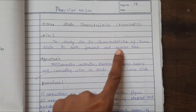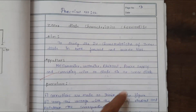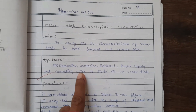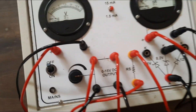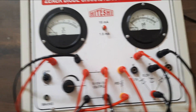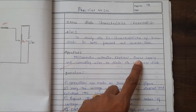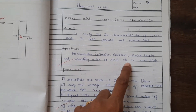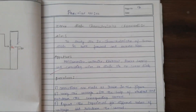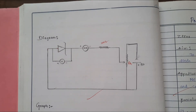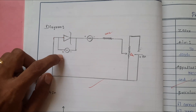In this experiment we have to study the IV characteristics of a Zener diode in both forward and reverse bias. The apparatus required — all available in this kit — includes a milliammeter, voltmeter, rheostat, power supply, connecting wires, and the Zener diode.